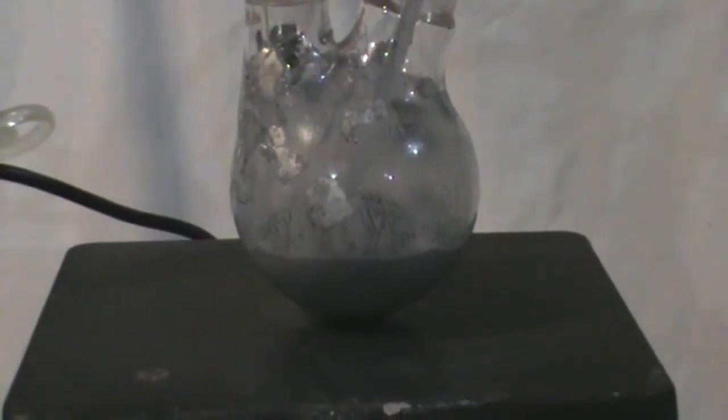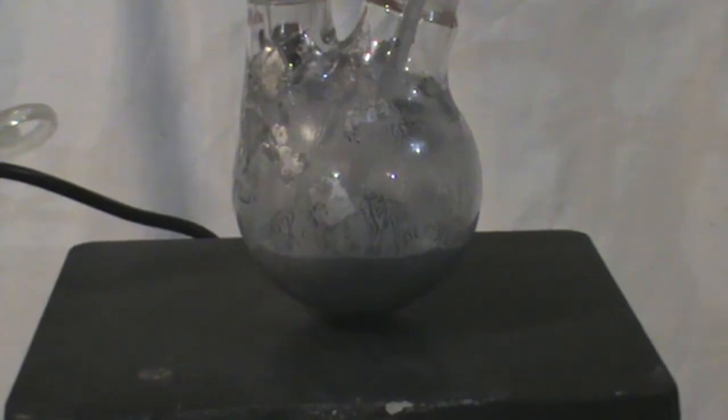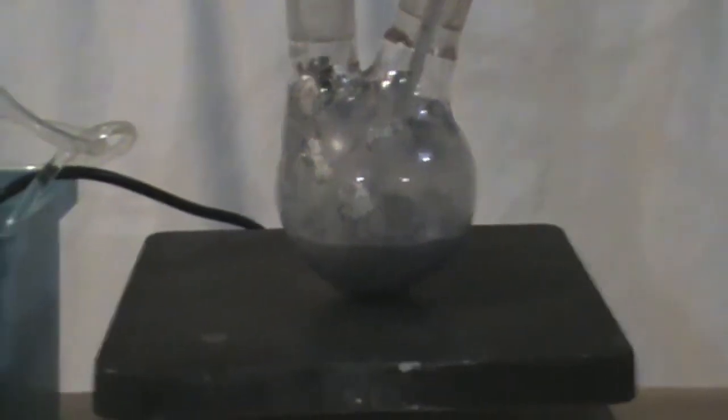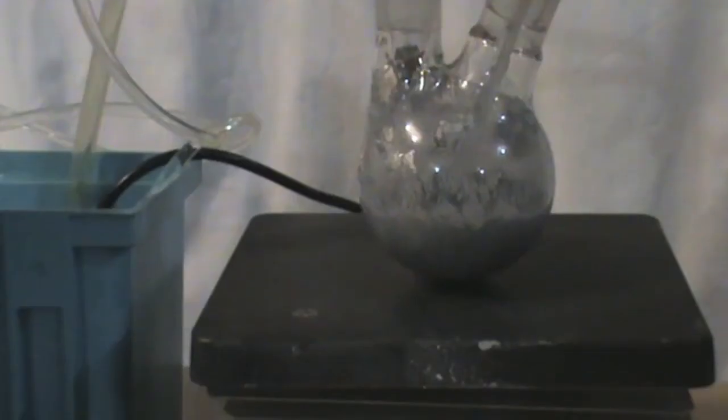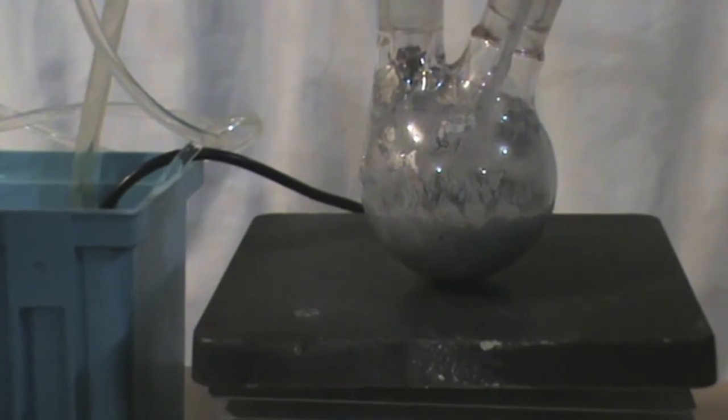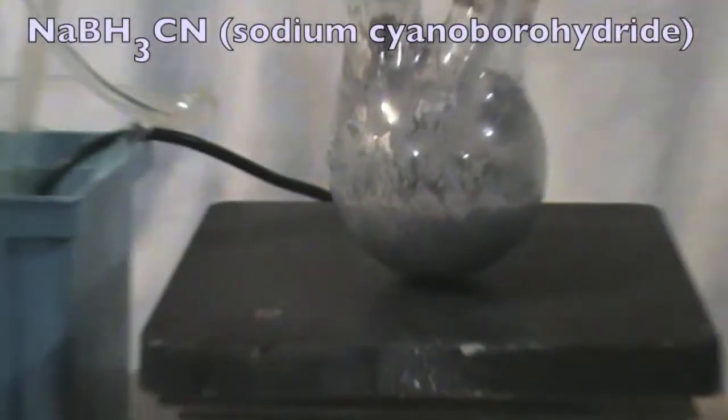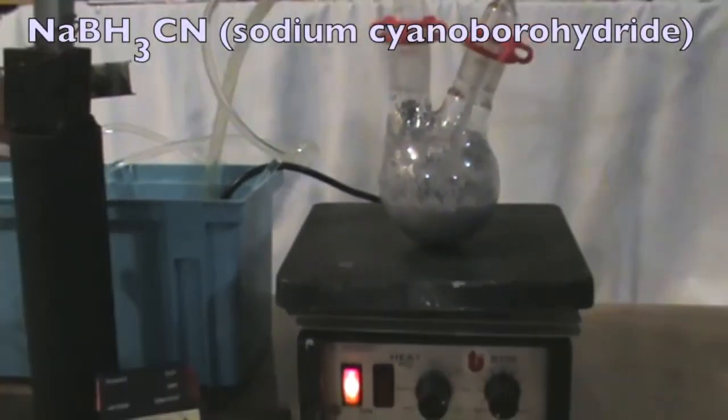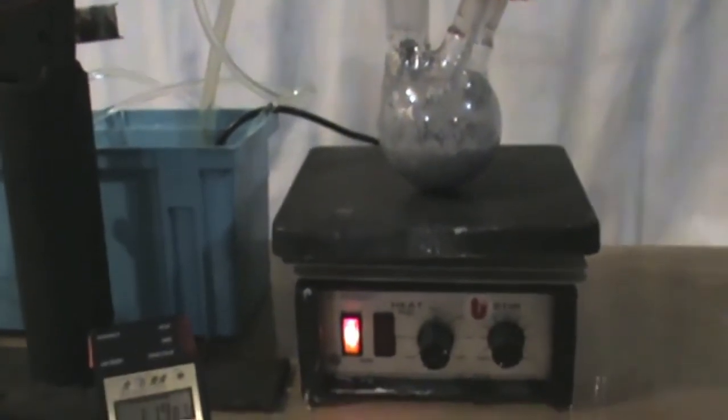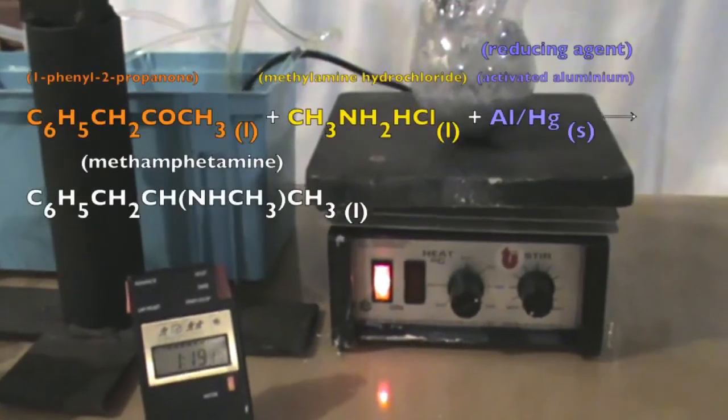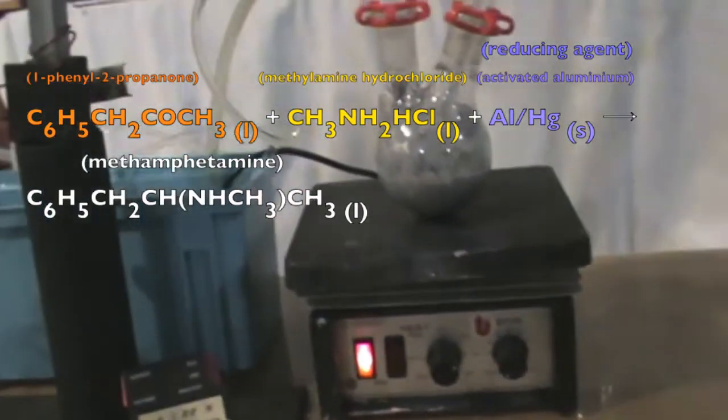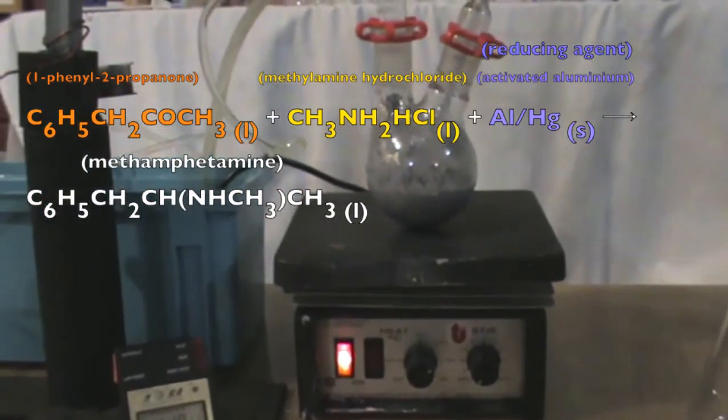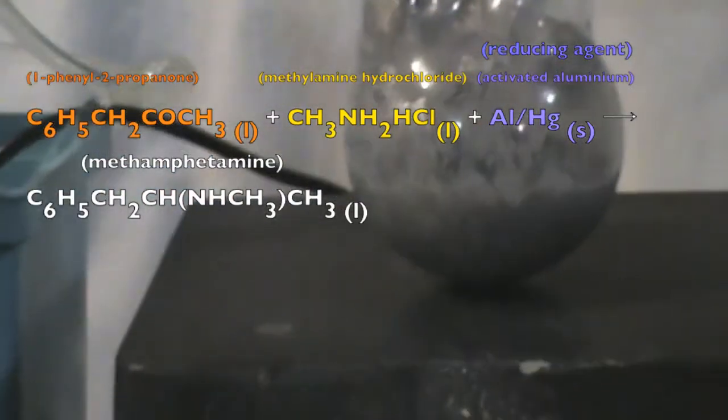First of all, let's define what reductive amination is. Amines can be synthesized in a single step by treatment of an aldehyde or ketone with ammonia or an amine in the presence of a reducing agent. Note, many different reducing agents are effective like sodium cyanoborohydride. For example, in our case, methamphetamine is prepared by reductive amination of 1-phenyl-2-propanone with methylamine using activated aluminum catalyst as the reducing agent.